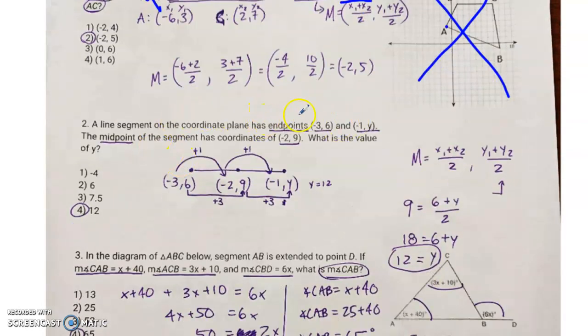For number 2, a line segment on the coordinate plane has endpoints this and that, the midpoint is this and that, what is the value of y? Here's a method that I use, it's called the jump method. I list out all the points, I list out one endpoint here, one endpoint here, and the midpoint here. If I don't know one of these points, I can figure it out using this jump method.